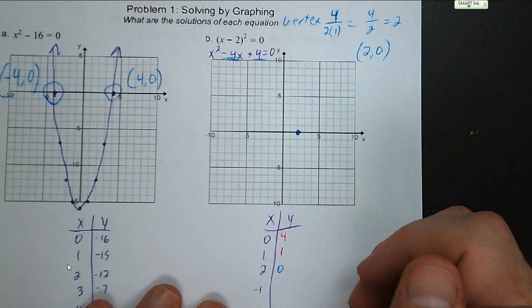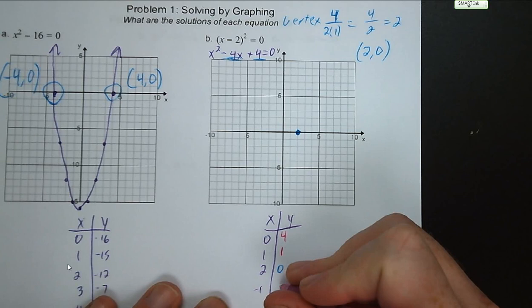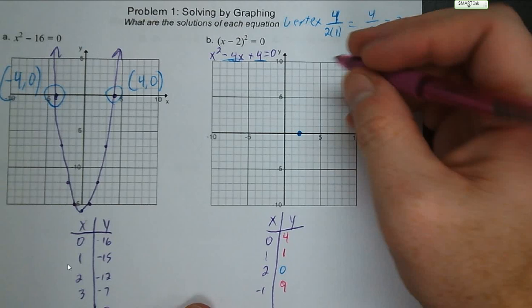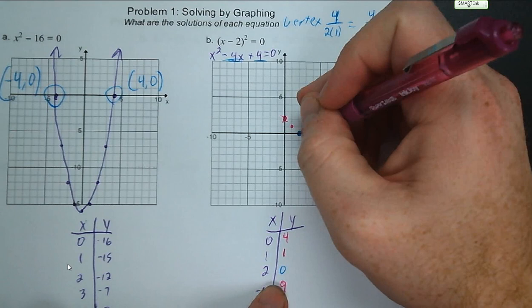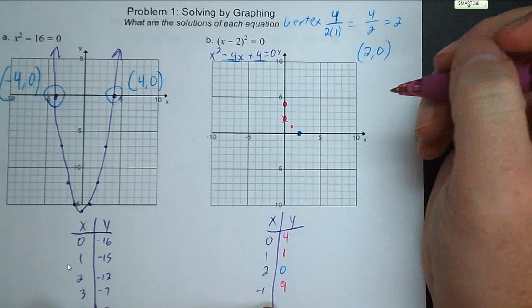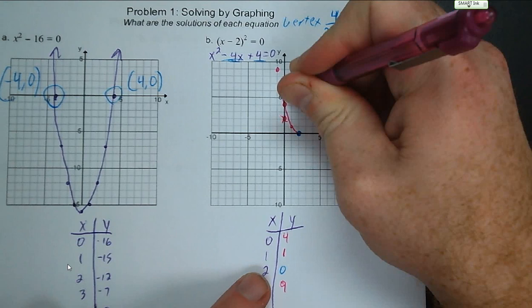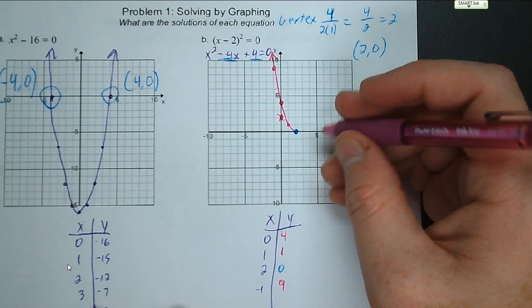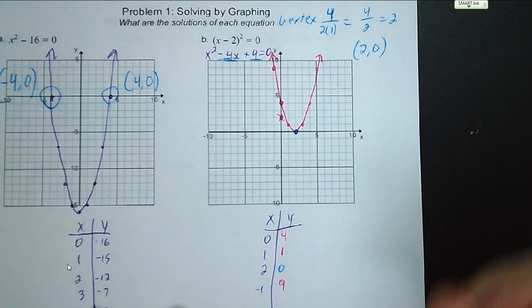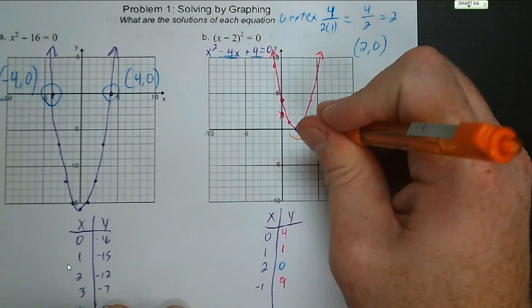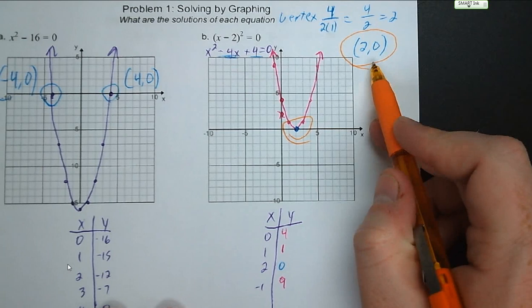So we have points: vertex at two zero, one one, zero four, and negative one nine. We mirror the graph across the axis of symmetry. Where am I touching the x-axis? In this case, it's only going to be at one point, right at the vertex. So my solution for this one is x equals two — that is the only place where it touches the x-axis. This is a case where there is only one solution to the quadratic equation.